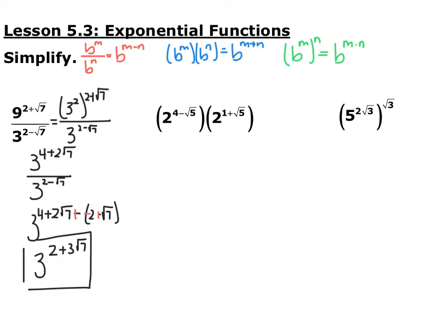If you subtract the exponents, make sure you distribute that negative inside, so you end up with 3 to the 2 plus 3 root 7. Just leave it that way. There's nothing else to really do.